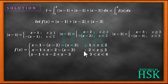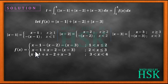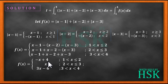For the interval x greater than 3 and less than 4: all values are greater than or equal to 1, so modulus of x minus 1 equals x minus 1; all values are greater than or equal to 2, so modulus of x minus 2 equals x minus 2; and modulus of x minus 3 equals x minus 3. On simplification: f(x) equals minus x plus 4 for 1 less than x less than or equal to 2; f(x) equals x for 2 less than x less than or equal to 3; and f(x) equals 3x minus 6 for 3 less than x less than 4.